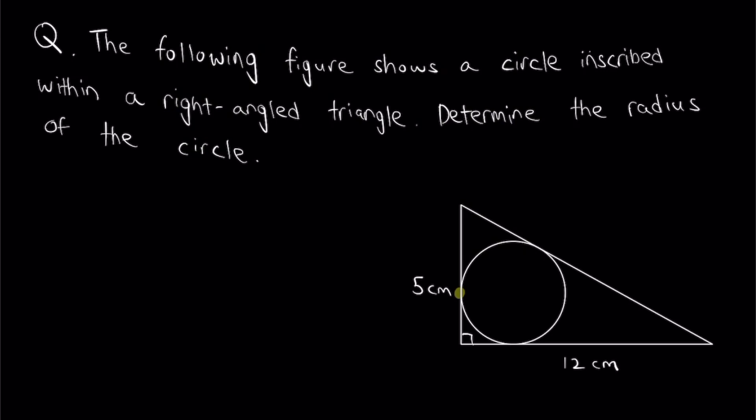One over here, one over here, and one over here. Now, with that information, what we need to try to do is find the radius of the circle.